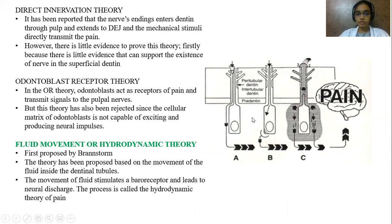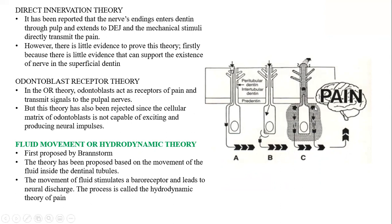Next is the odontoblast receptor theory. According to this theory, the odontoblast can act as a receptor of pain and transmit signals to pulpal nerves. But this theory is also rejected since the cellular matrix of the odontoblast is not capable of exciting and producing nerve impulses. The third theory — the fluid movement or hydrodynamic theory — was first proposed by Brannstrom. Based on movement of fluid in the dentinal tubule, this movement stimulates nerve fibers in the pulp, perceived as pain by the brain, via stimulation of a baroreceptor leading to neural discharge.